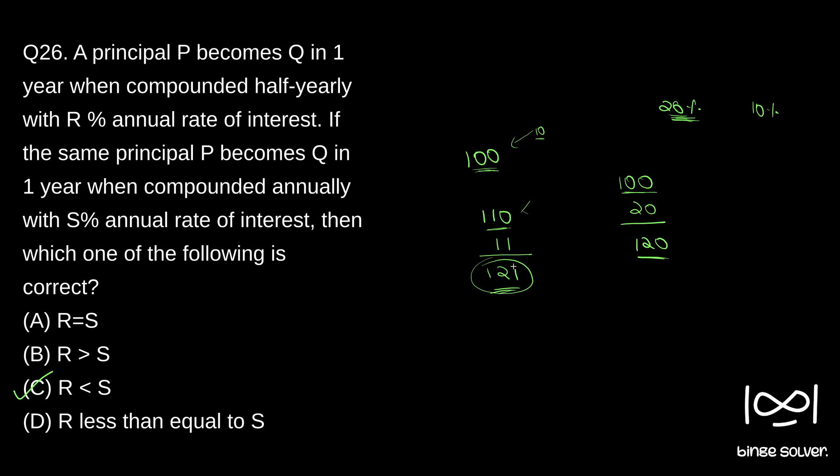So if you compound half-yearly, we will get 121. And if you just compound annually, we will get 120 rupees. So as you can see, if you compound half-yearly we are getting better interest.